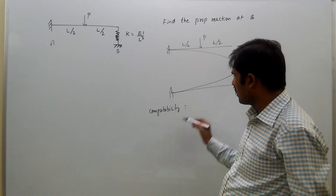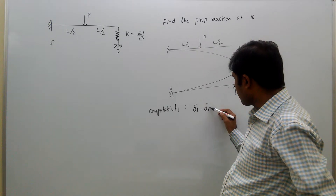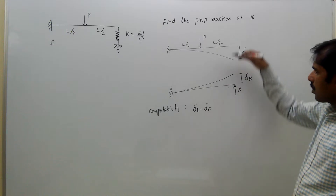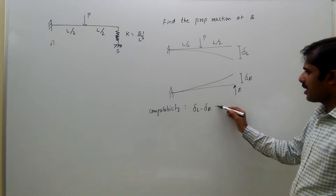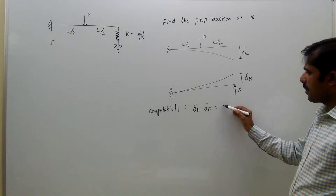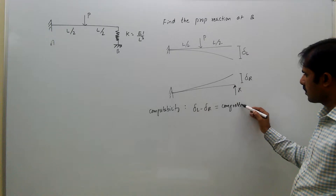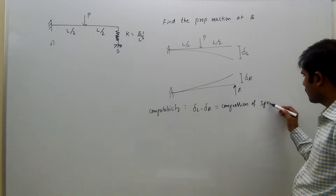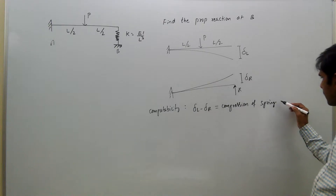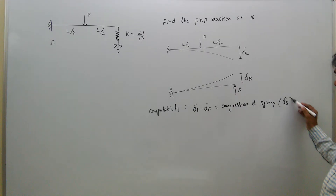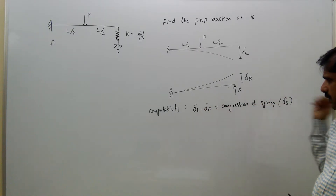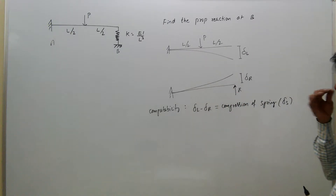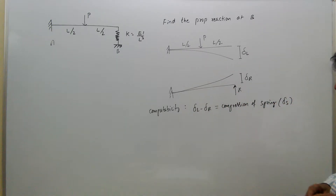So compatibility is: delta L minus delta R equals delta S, where delta S is the compression of the spring. If the spring were not there, delta L minus delta R would equal zero. But since the spring is there, delta L minus delta R equals delta S. Now we will first find delta L.